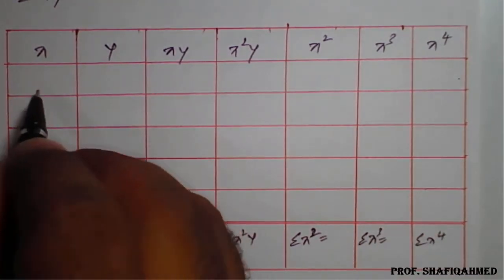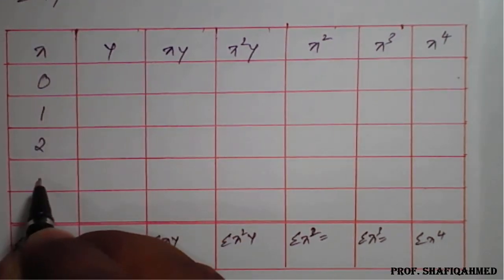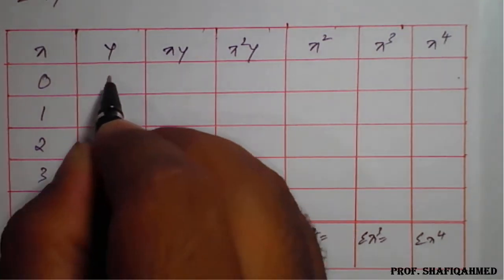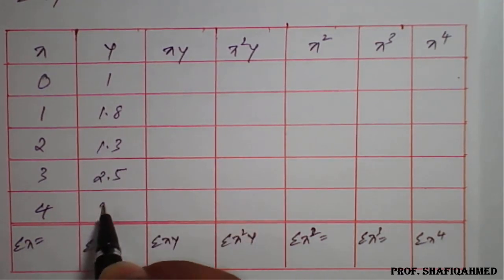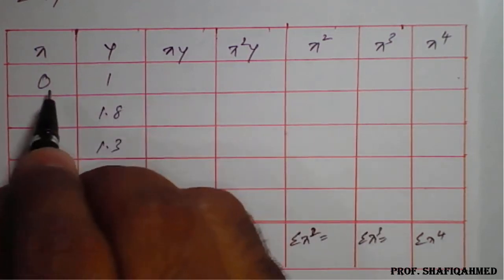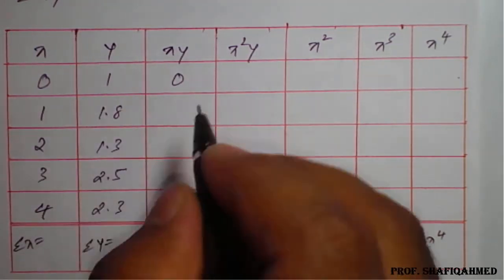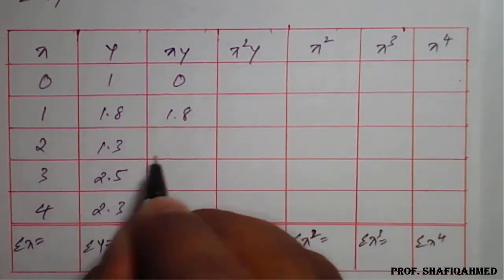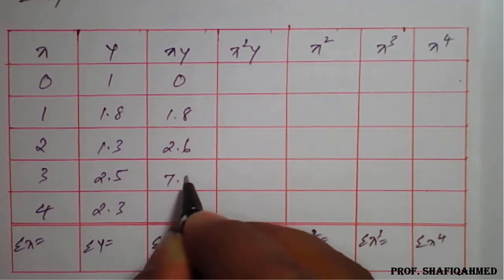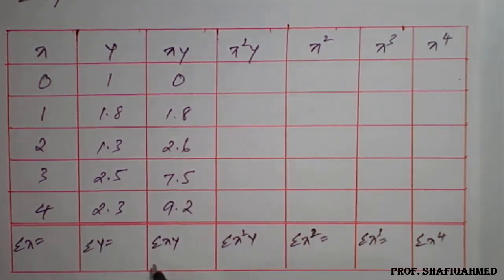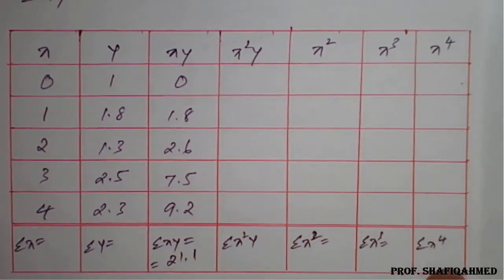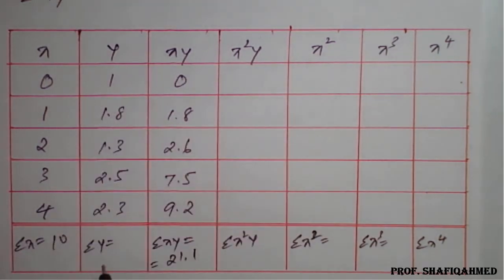The x values are 0, 1, 2, 3, and 4. The y values are 1, 1.8, 1.3, 2.5, 2.3. For xy: 0×1=0, 1×1.8=1.8, 2×1.3=2.6, 3×2.5=7.5, 4×2.3=9.2. So summation(xy) = 21.1. Summation(x) = 10, and summation(y) = 8.9.